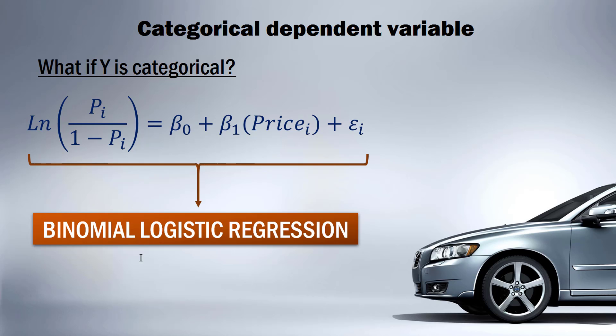This is called a binomial logistic regression. Binomial because there are only two outcomes — you either sell the car or you don't. Logistic because we have this log odds situation; whenever we have a log odds it's called logistic or logit.